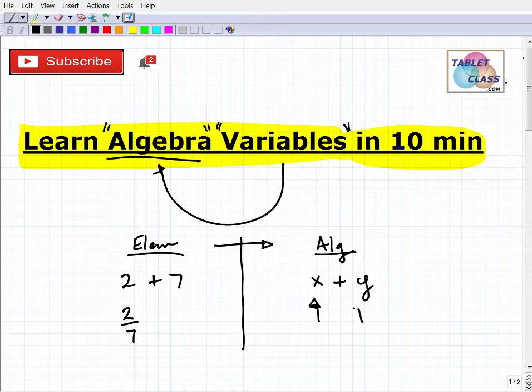A variable in algebra is nothing more than a symbol, oftentimes a letter that represents a number. Anytime you see an x, a y, a z, a w, anything like that, it's a placeholder for a number. What number specifically do these variables represent? Well, it's all up to you.